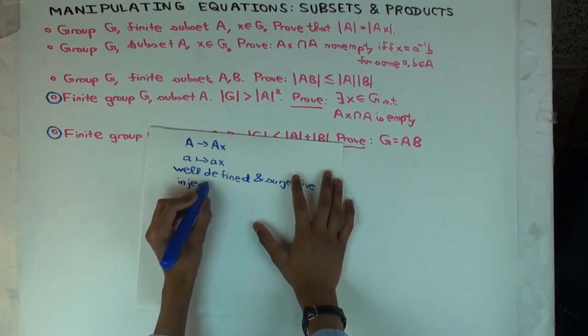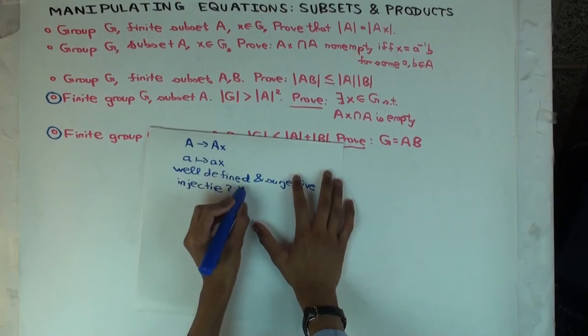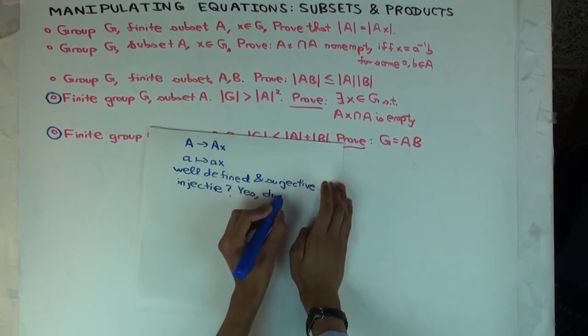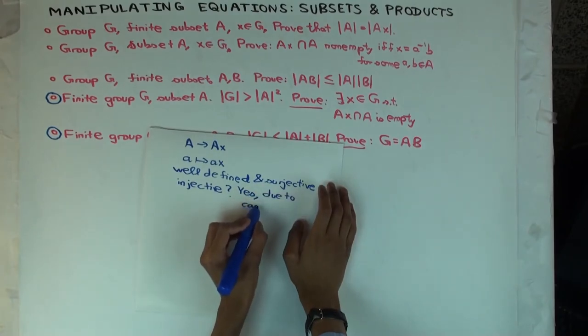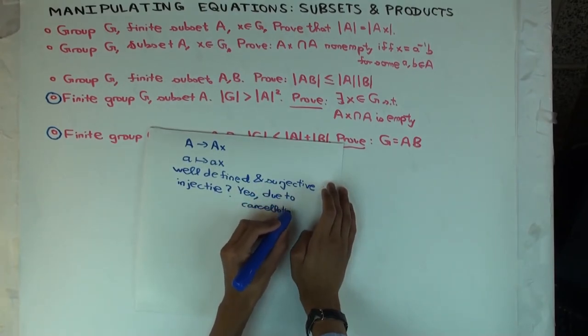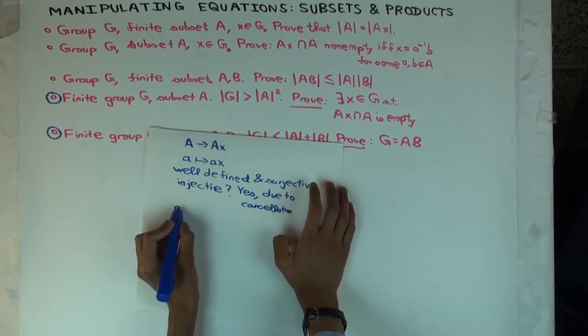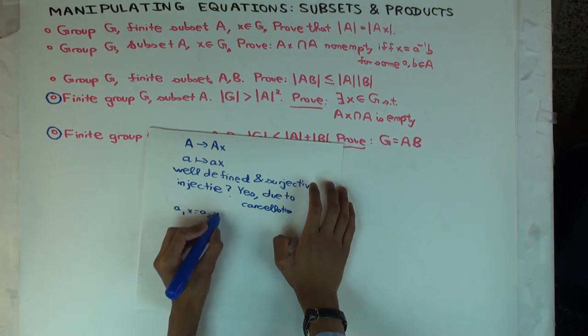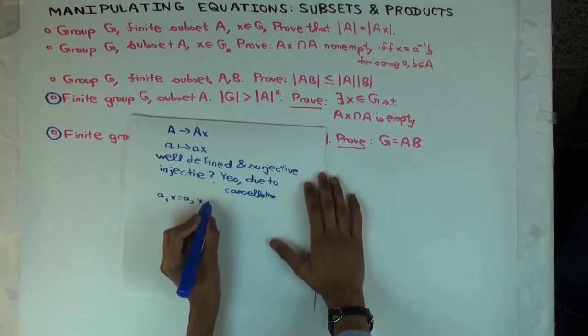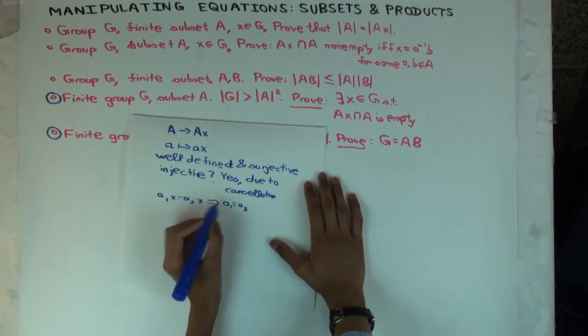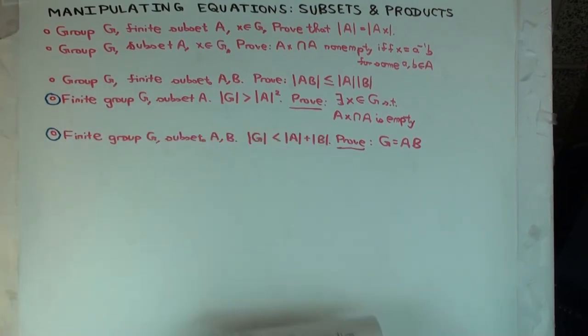So why is it injective? If A1X equal to A2X, so if two elements A1 and A2 of A map to the same thing, then that would imply that A1 equal to A2, which is exactly what saying that it's injective. Different things cannot map to the same thing. Therefore you have a bijection between A and AX and therefore the sets have the same size.